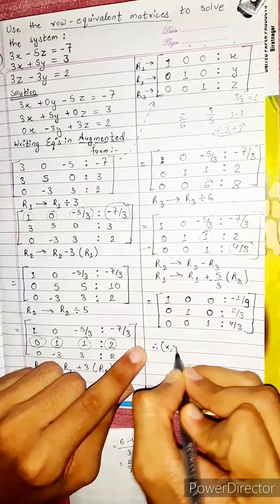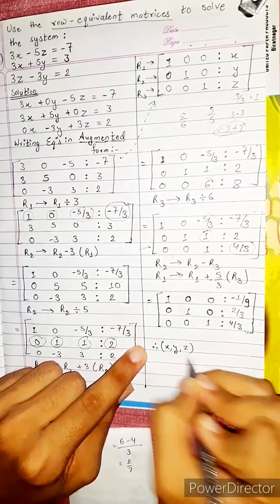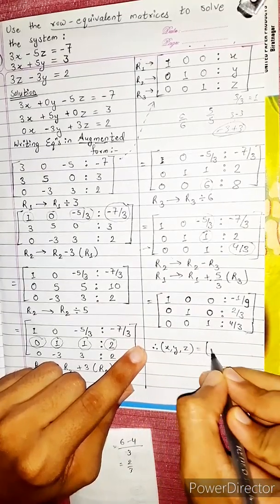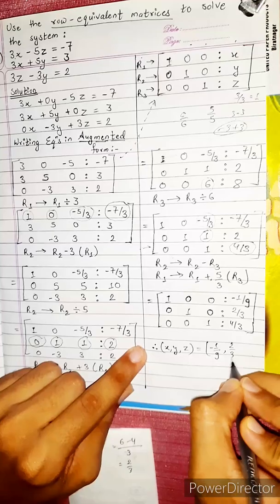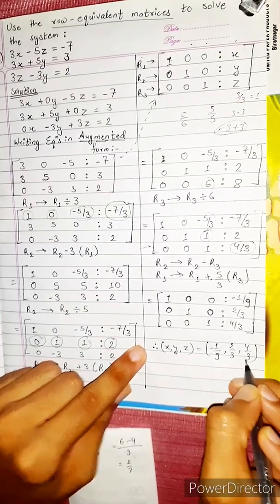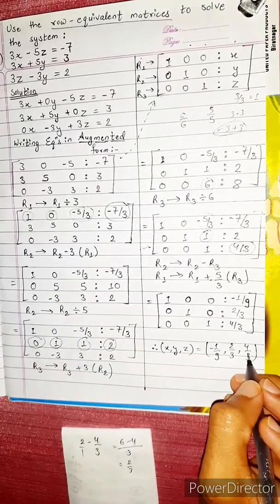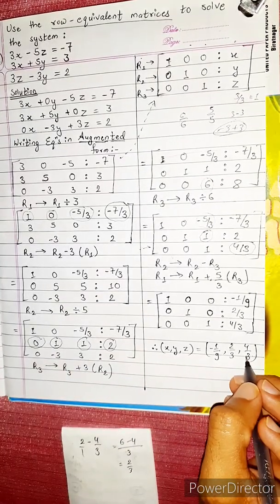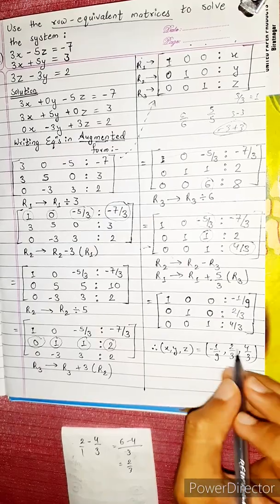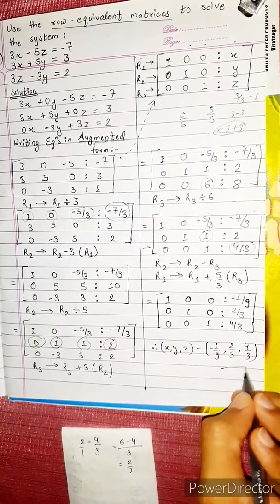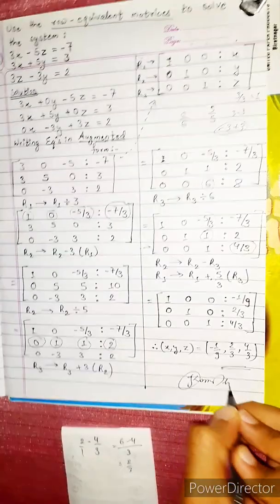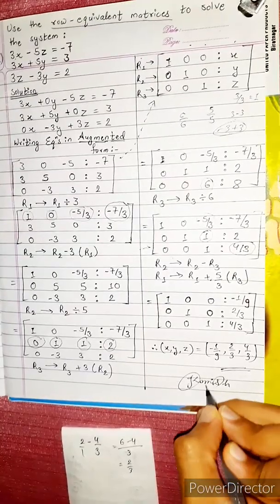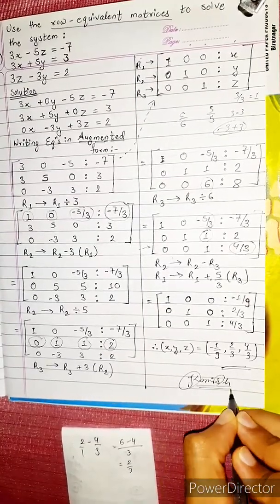This is the answer. From the reduced row echelon form, we can read off the solution: x = -1/9, y = 2/3, z = 4/3. That is the right answer.